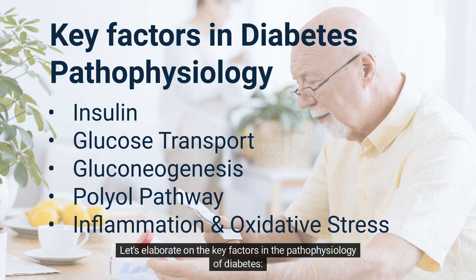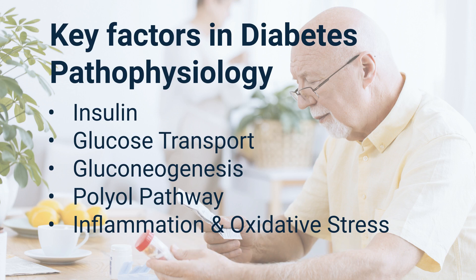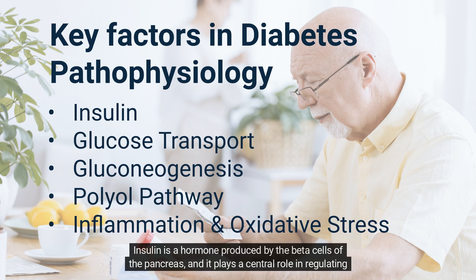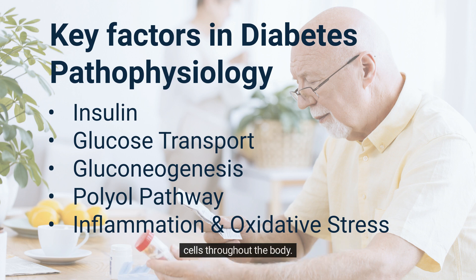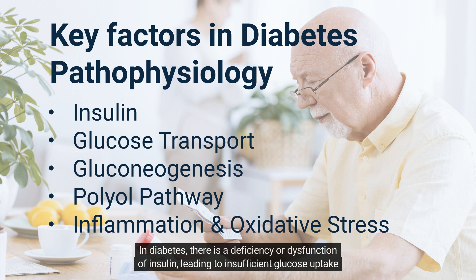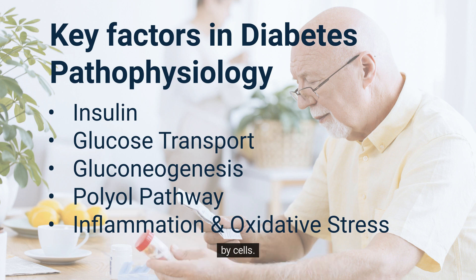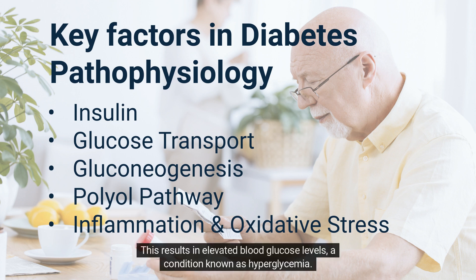Key factor 1 — Insulin: Insulin is a hormone produced by the beta cells of the pancreas, and it plays a central role in regulating blood sugar levels. When glucose enters the bloodstream after eating, insulin is released to help transport glucose into cells throughout the body. In diabetes, there is a deficiency or dysfunction of insulin, leading to insufficient glucose uptake by cells. This results in elevated blood glucose levels, a condition known as hyperglycemia.